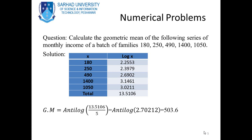Log 250 = 2.3979; log 490 = 2.6902; log 1400 = 3.1461; log 1050 = 3.0211. Taking the sum of the log X column: Σ(log x) = 2.2553 + ... + 3.0211 = 13.5106. Geometric mean = anti-log(13.5106 / 5) = anti-log(2.70212).